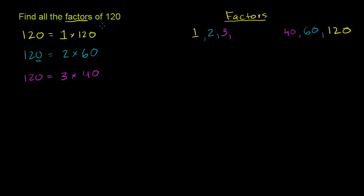Now let's see if 4 divides into 120. The divisibility rule for 4 is: ignore everything beyond the tens place and just look at the last two digits. The last two digits are 20, and 20 is definitely divisible by 4, so 120 will be divisible by 4. To figure out what to multiply 4 by: 12 divided by 4 is 3, so 120 divided by 4 is 30. So we have two more factors: 4 and 30.